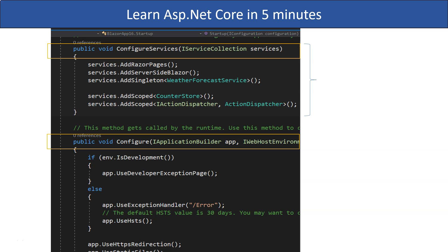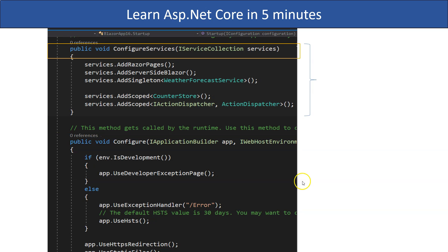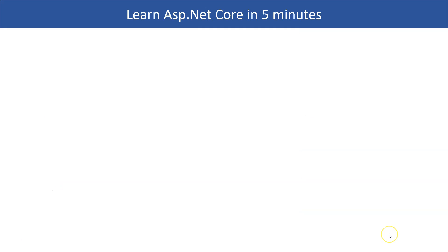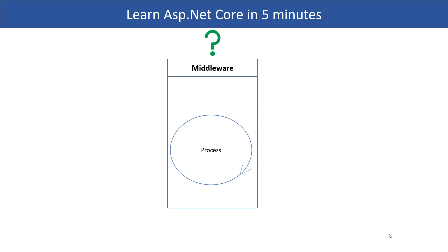But officially, the configure services method is where developers do dependency injections in order to plug in the services that the middleware will use for processing the HTTP requests. So you may ask, as an ASP.NET Core web developer, is it true that my job is to create middleware and configure them?